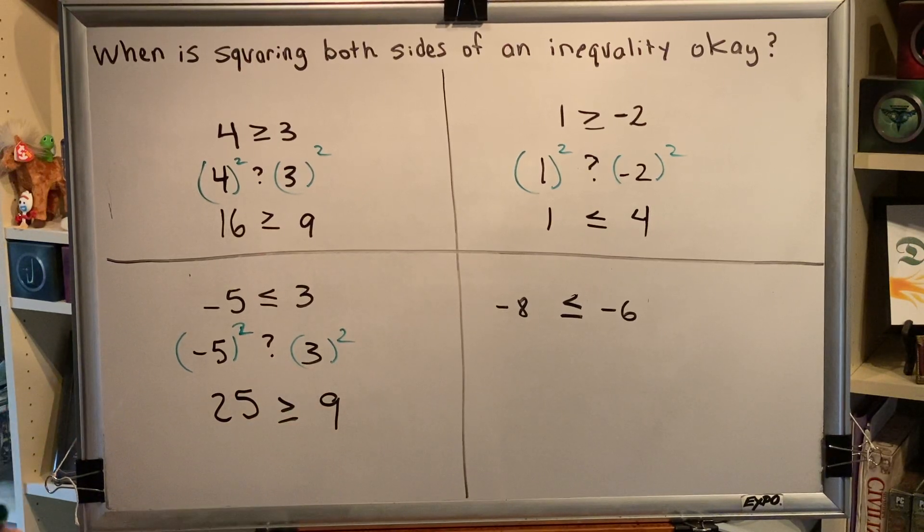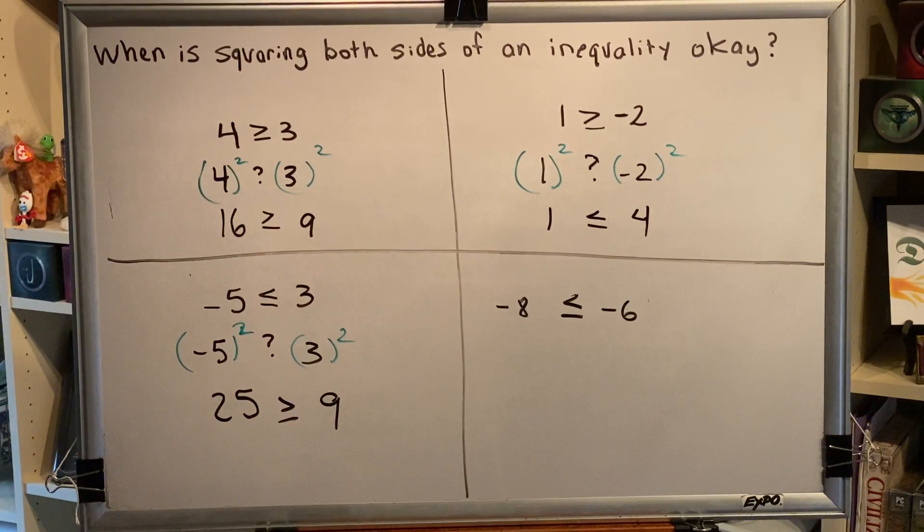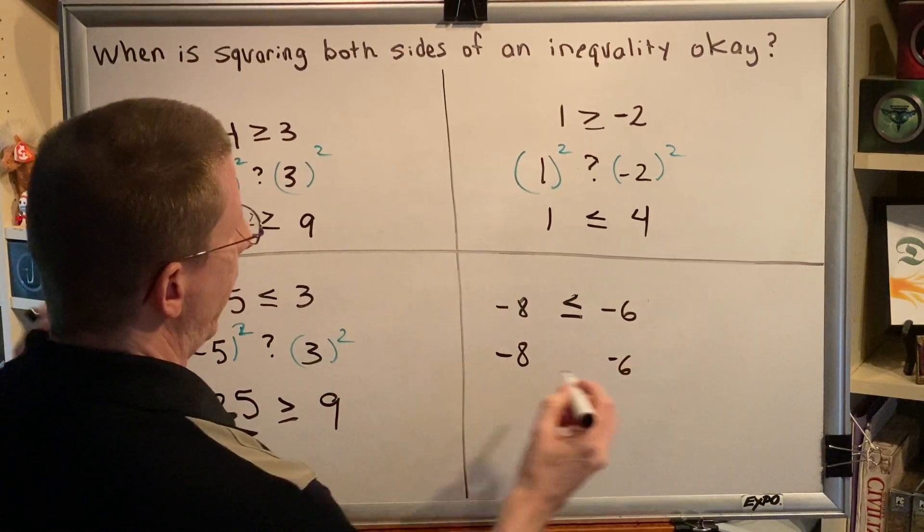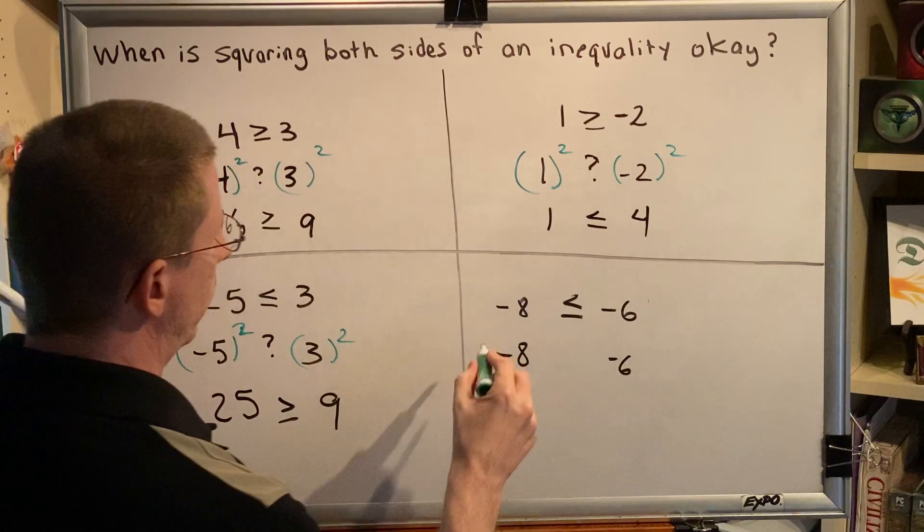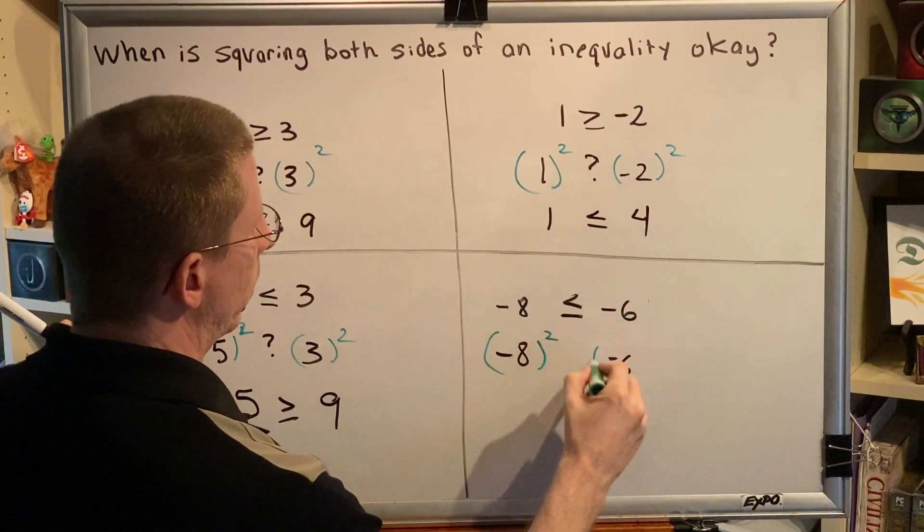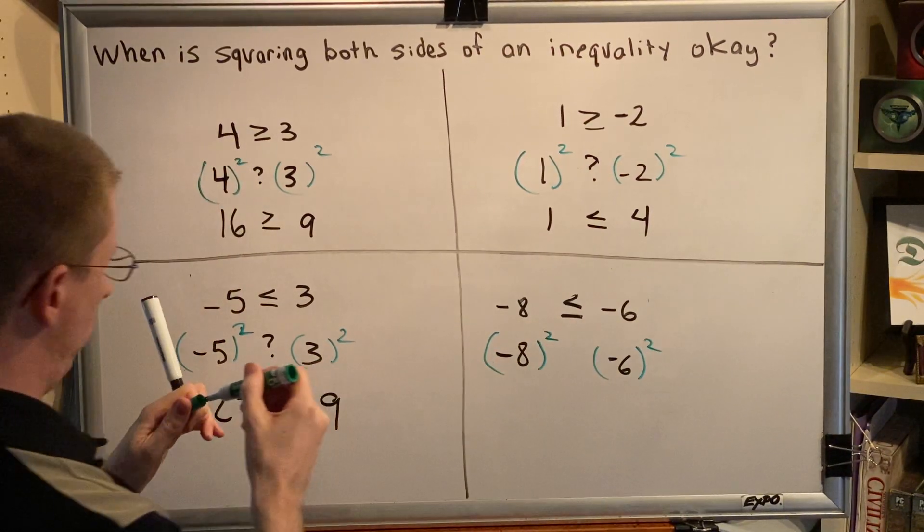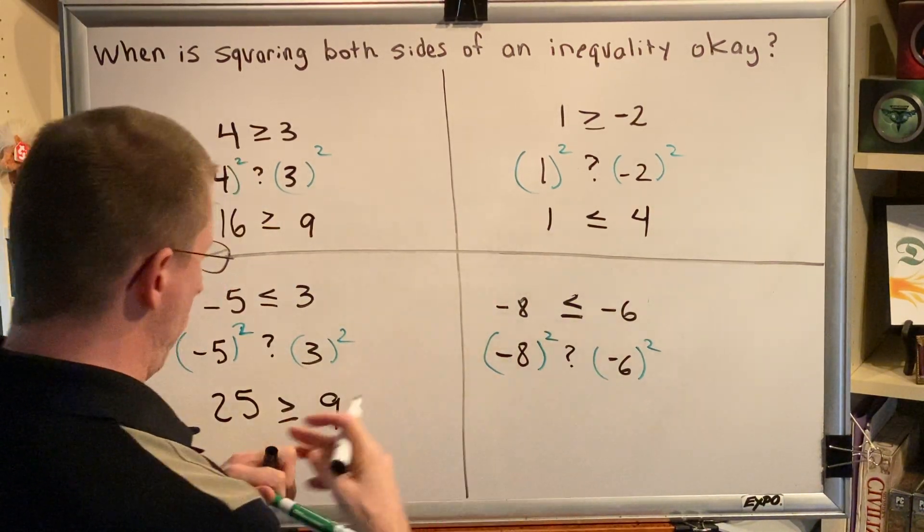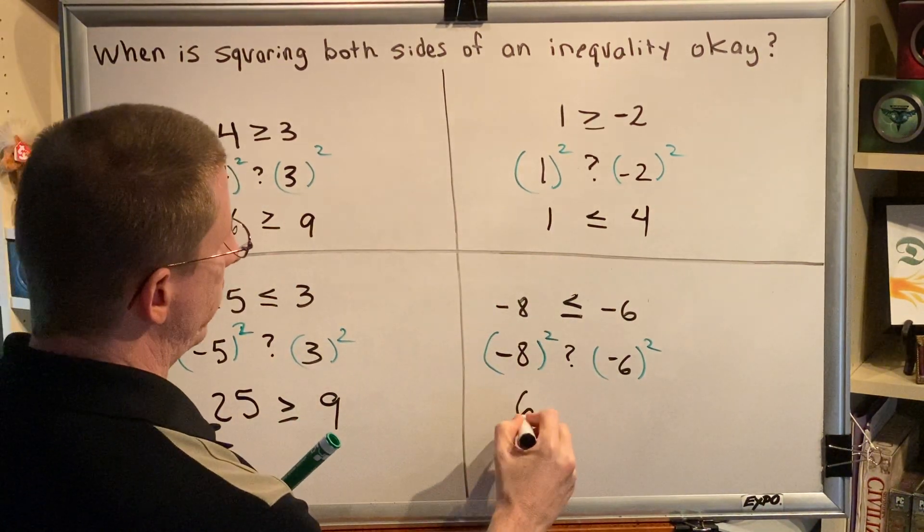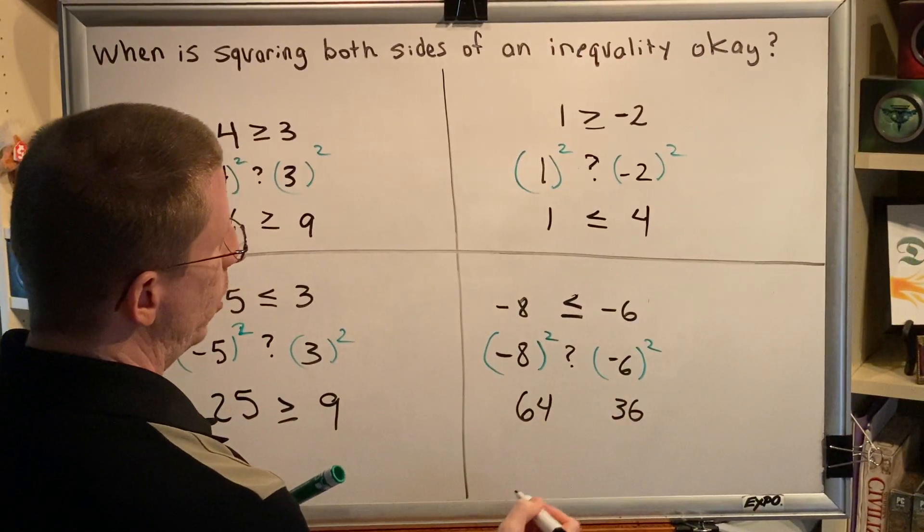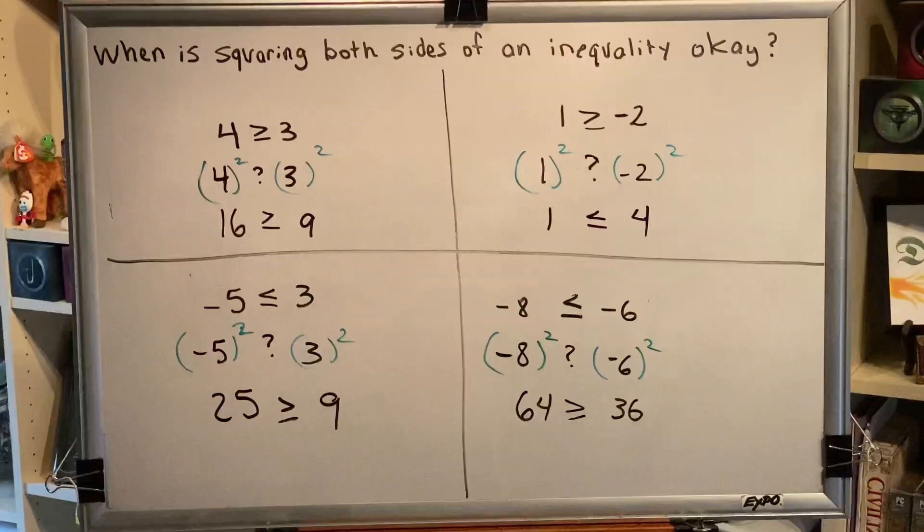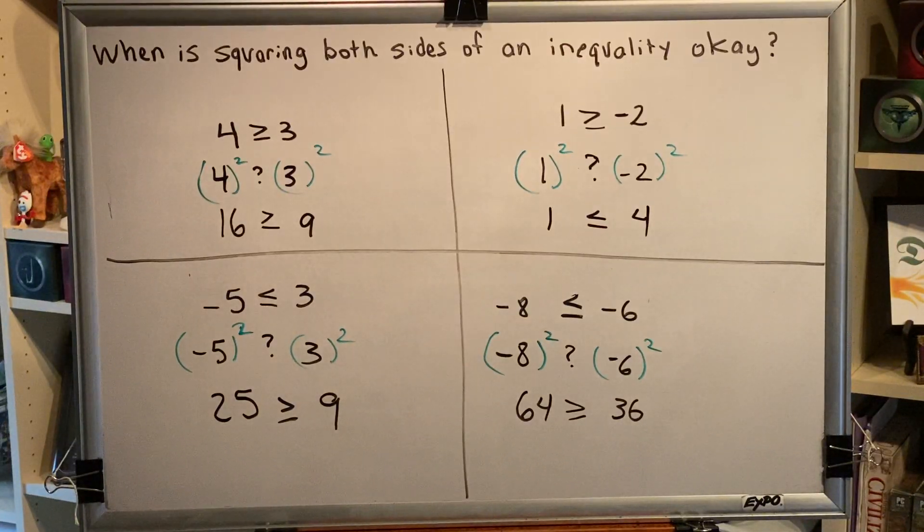Last example: so negative eight, we're going to square that, negative six we're going to square that, and then we have to figure out what sign is supposed to go in the middle. Well, negative eight squared is 64, negative six squared is 36, and the sign would apparently in this case flip.